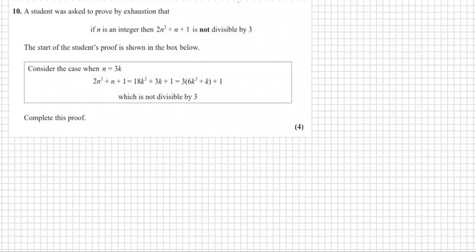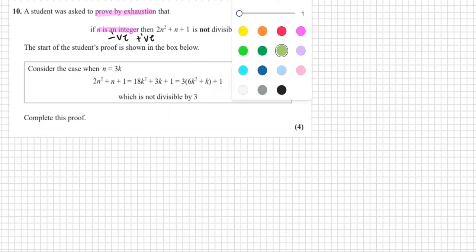Question 10 states to prove the following by exhaustion. It says that n is an integer, which means it's negative or positive whole numbers. Then the student says that 2n² + n + 1 will not be divisible by 3 if n is an integer.